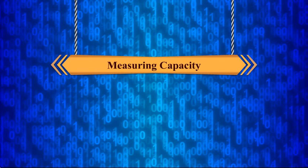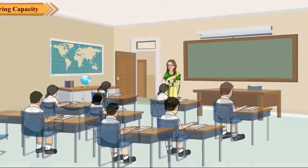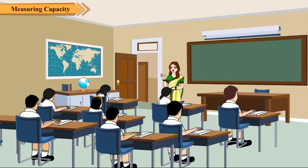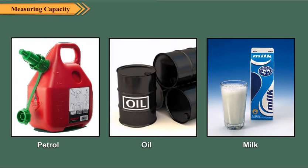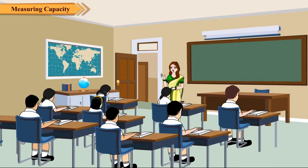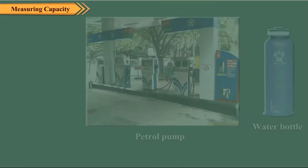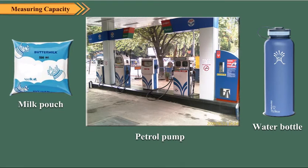Measuring Capacity. Children, in our everyday life, we measure the quantities of various liquids such as petrol, oil, milk, etc. Let us now discuss how we can measure the capacity of a container. The quantity of a liquid that a container or a vessel can hold is called its capacity. So the capacity of a container tells us how much of a liquid it can hold.